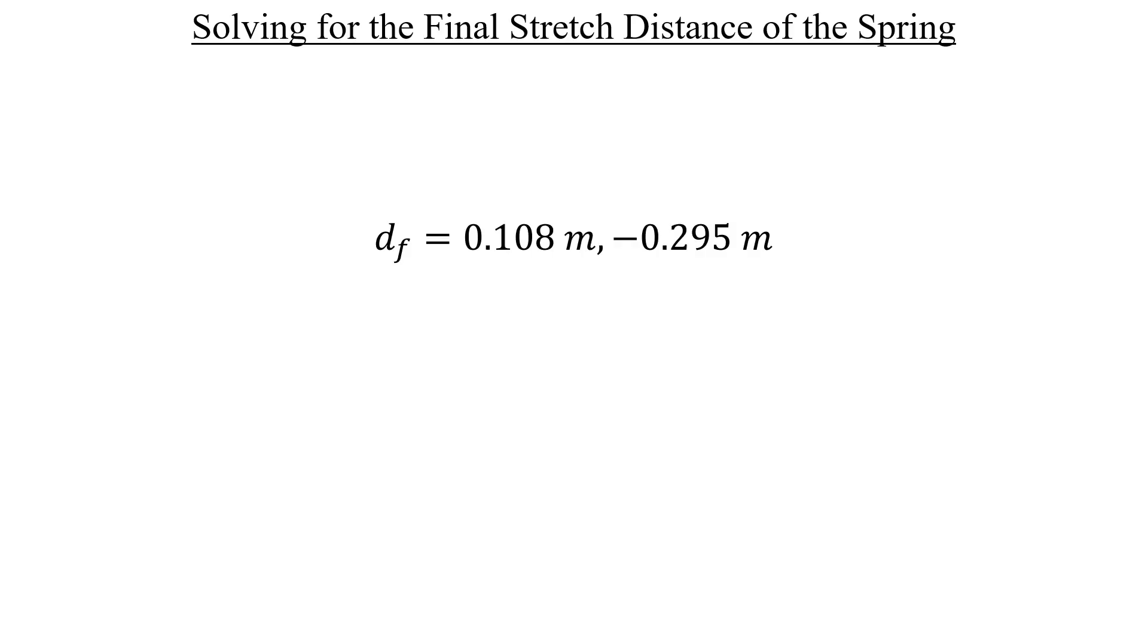Here's what we got on the calculator. And since D sub F needs to be negative, we'll go ahead and throw away this positive result. So in the end, we get a final stretch distance of 0.295 meters in the downward direction. And with that, we're done. Thanks for watching.